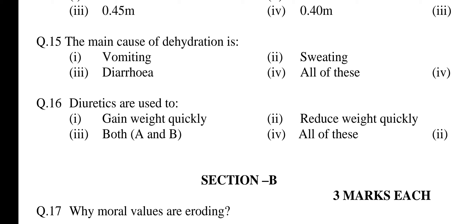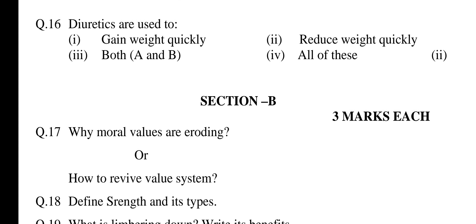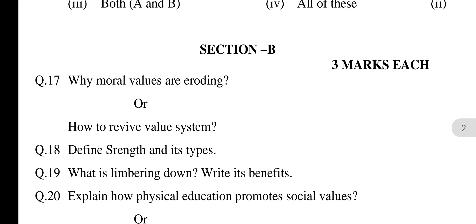Question 15: The main cause of dehydration is — option 1: Vomiting, 2: Sweating, 3: Diarrhea, 4: All of these. Answer is option 4 — all of these. Question 16: Diuretics are used to — option 1: Gain weight quickly, 2: Reduce weight quickly, 3: Both first and second, 4: All of these. Answer is option 2 — reduce weight quickly.